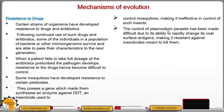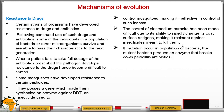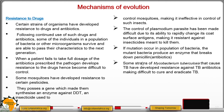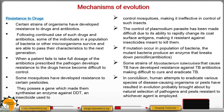The control of the Plasmodium parasite, the causative agent for malaria, has been made difficult due to its ability to rapidly change its surface antigens, making it resistant against insecticides manufactured to kill it. If mutations occur in a population of bacteria, the mutant bacteria produce an enzyme that breaks down penicillin or an antibiotic. Some strains of Mycobacterium tuberculosis that cause TB have developed resistance against TB antibiotics, making it difficult to cure and control TB.